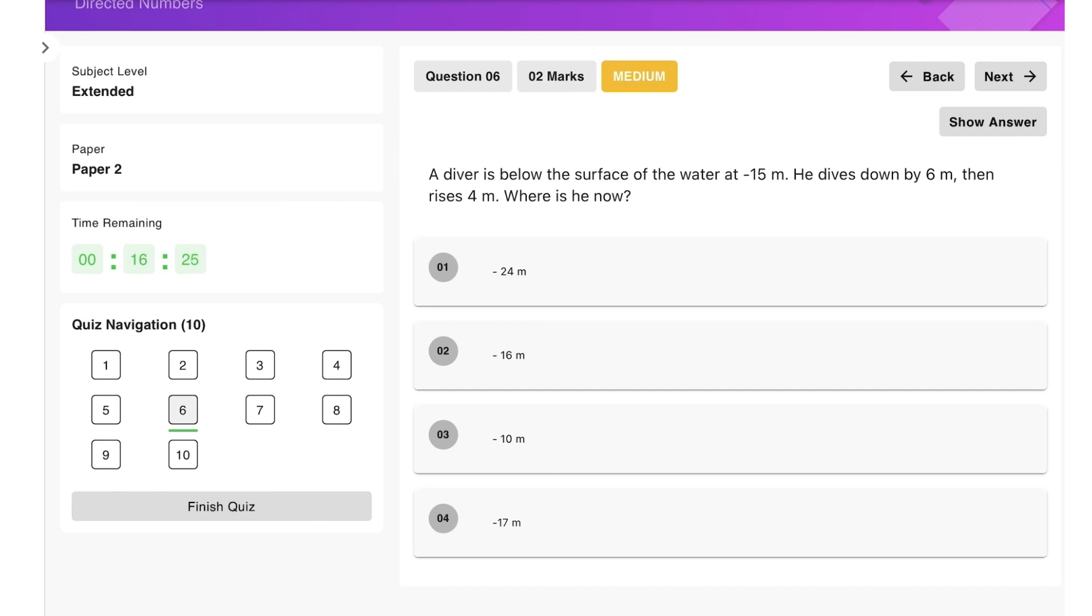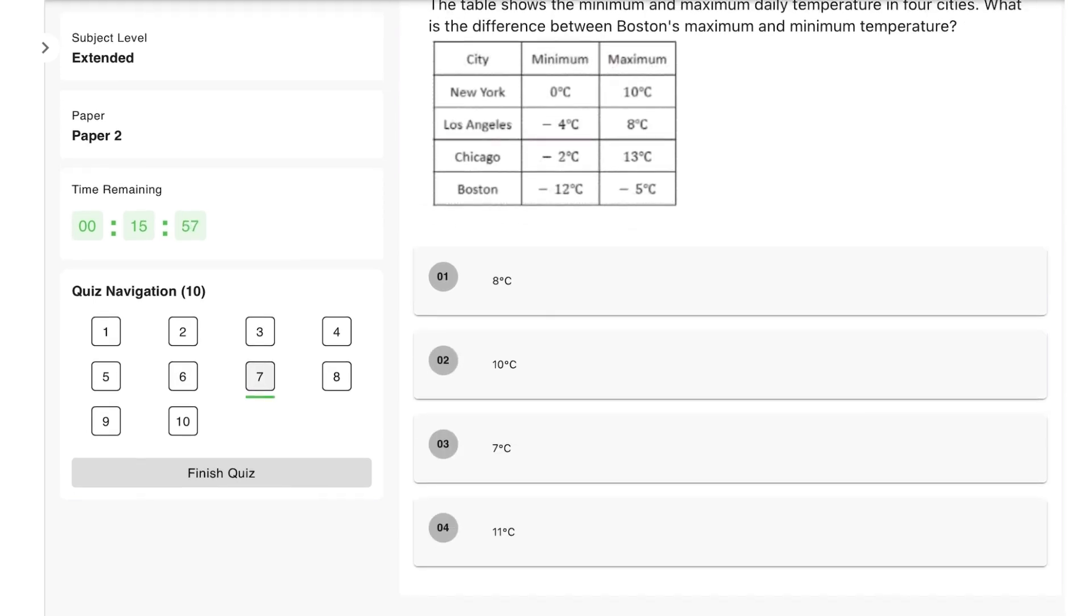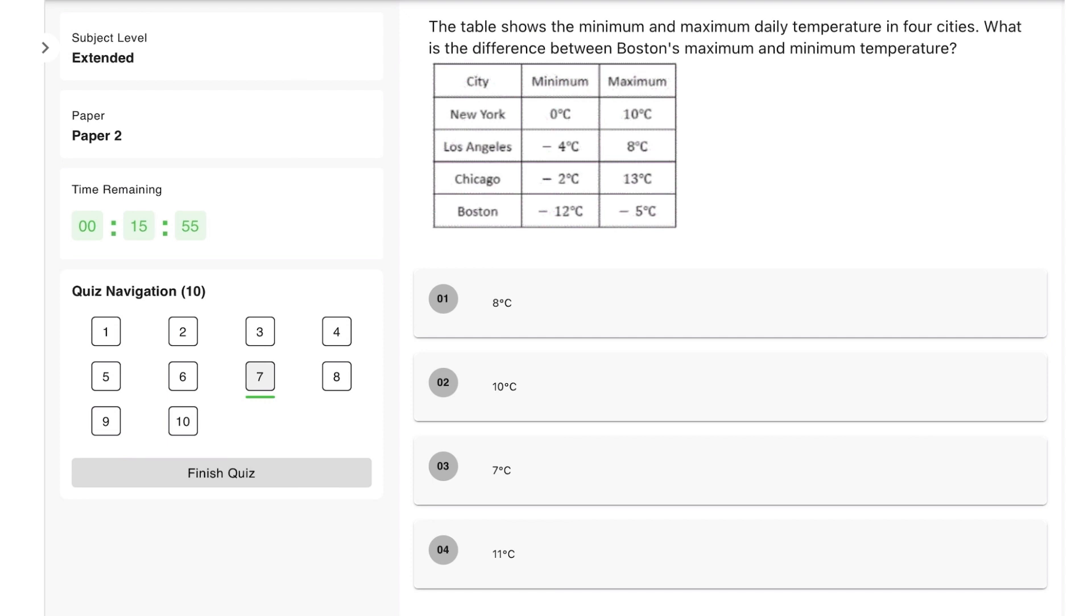Moving on, a diver is below the surface of the water at negative 15 meters. He dives down by 6 meters, then rises 4 meters. Where is he now? We have negative 15, then going down further by 6, then rising by 4. This is negative 21 plus 4, which is negative 17 meters. That's option four.